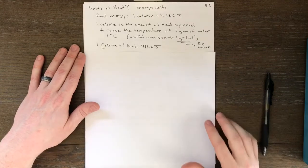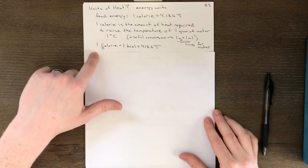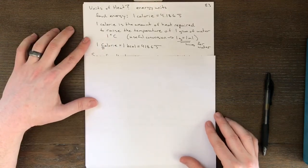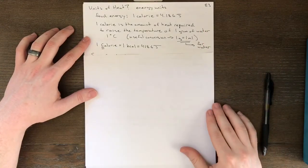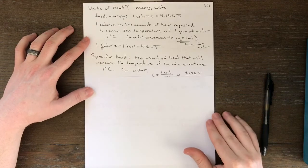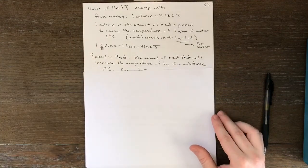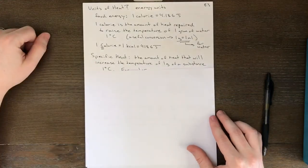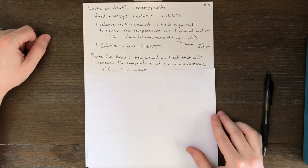Joules are a fairly tiny unit, but really this is what you see on your nutrition facts, capital C calories, which is really a thousand of those little calories. So this definition of the calorie actually also defines specific heat, which is one of our most important definitions for this chapter. Specific heat is defined as the amount of heat that will increase the temperature of one gram of a substance, one degree Celsius.